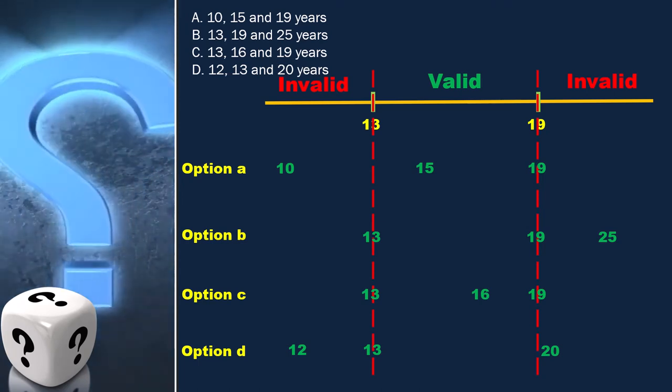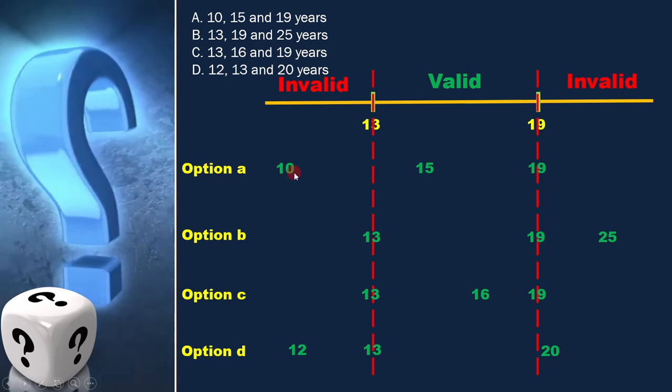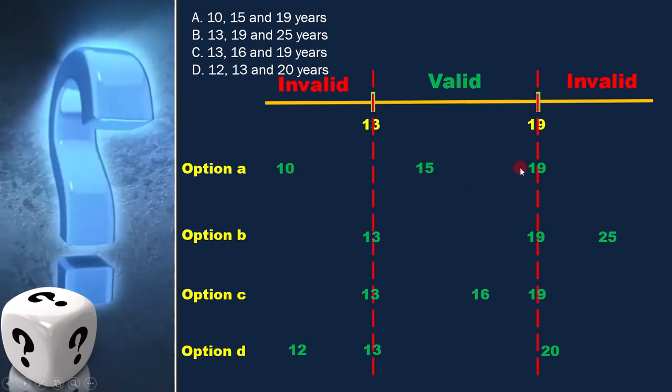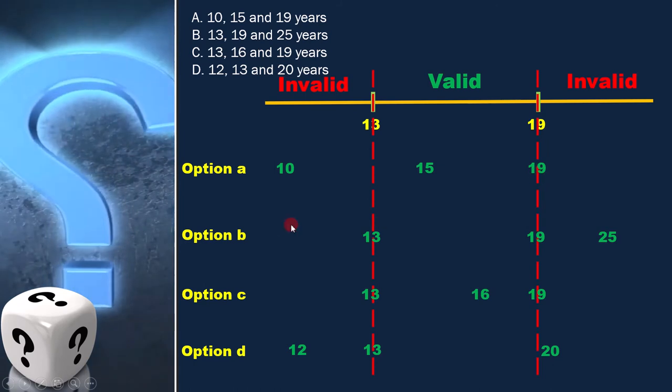In option A, 10 is in the invalid range, whereas 15 and 19 are in the valid range.